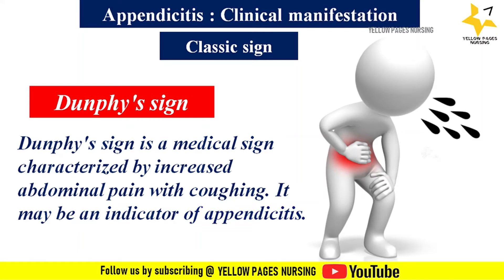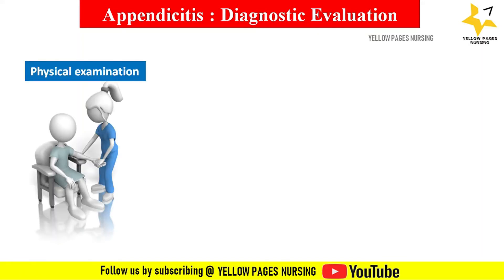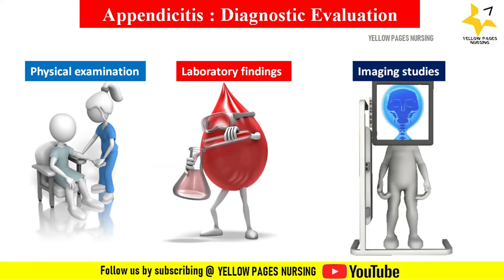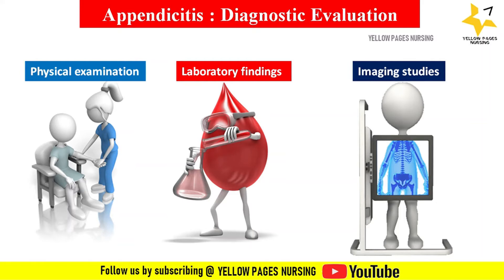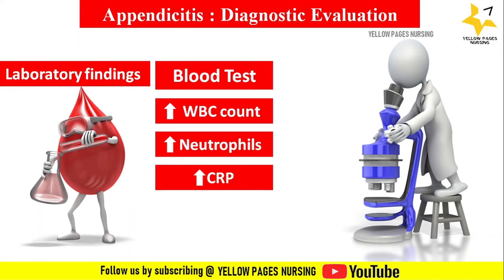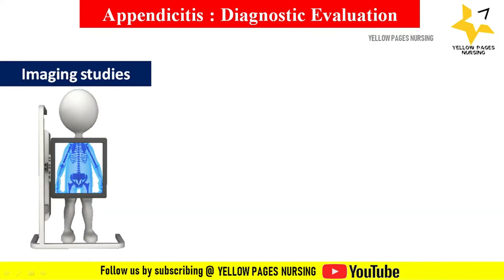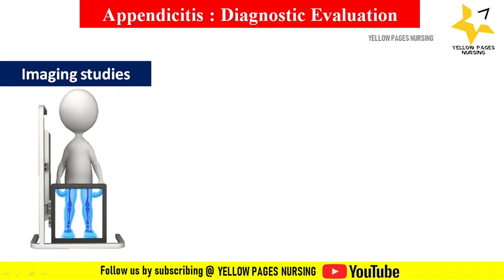Diagnostic evaluation is based on physical examination, laboratory findings, and imaging studies. In laboratory findings, blood tests show increased WBC count, increased neutrophils, and increased C-reactive protein. In urine tests, a higher percentage of ketone bodies in urine with appendicitis may be associated with starvation secondary to anorexia, which is one of the common symptoms.